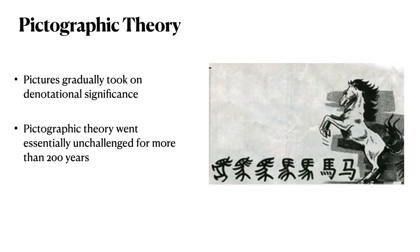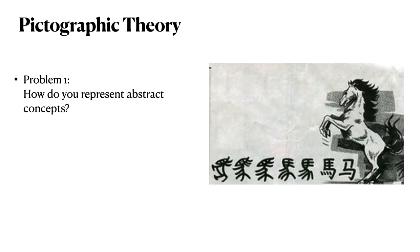The pictographic theory of the origins of writing went essentially unchallenged for more than 200 years. Let's now consider two important problems that the pictographic theory of language writing origins fails to successfully answer. The first problem is in regards to abstractions. While it's fairly straightforward to see how you can go from a picture of a horse to an abstract symbol of a horse, it's much harder to imagine abstract concepts following this same process. The pictographic theory of language origins fails to properly address the question: how do you represent abstract concepts?